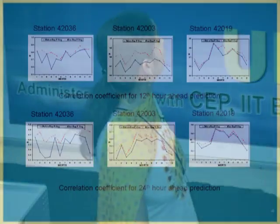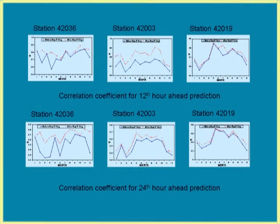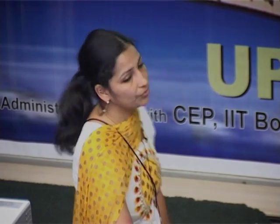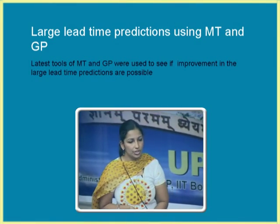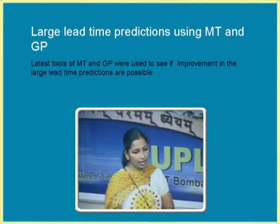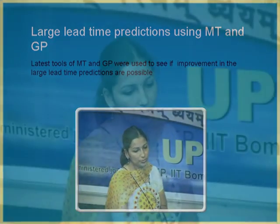The picture becomes more clear with the graph. The dotted lines are after filling of the gaps and the full line is before filling the gaps, for 12th and 24th hour data. Data mining tools like model trees and genetic programming were also applied to see if improvement in large lead times could be achieved.